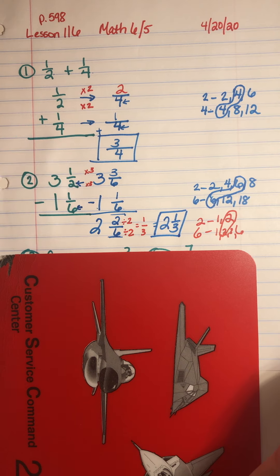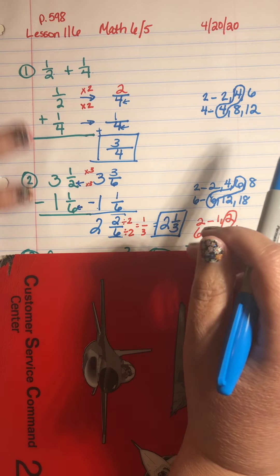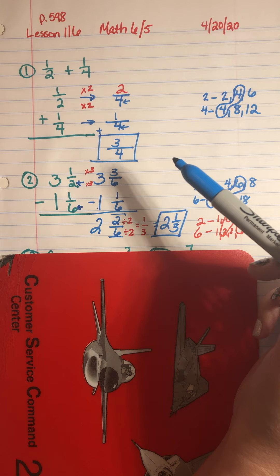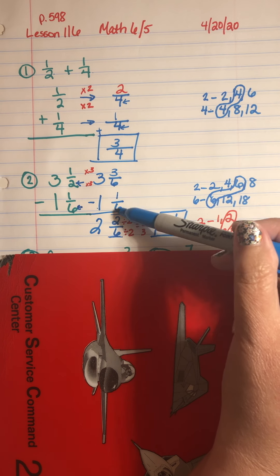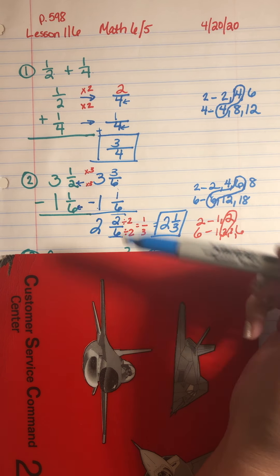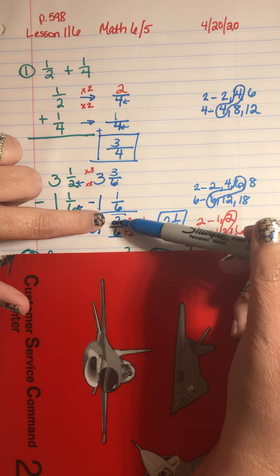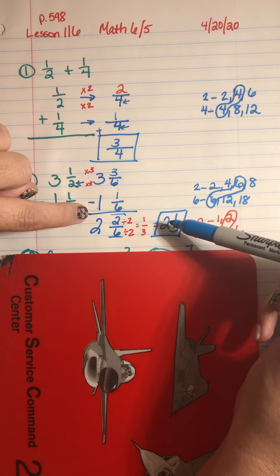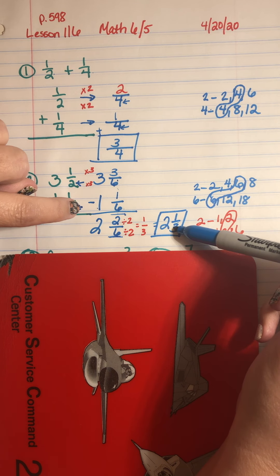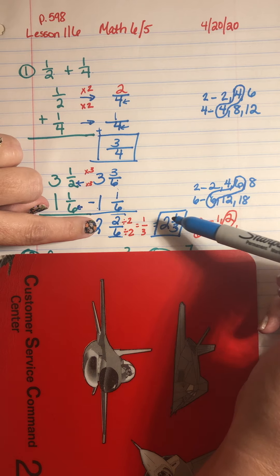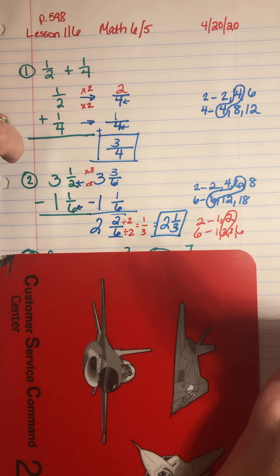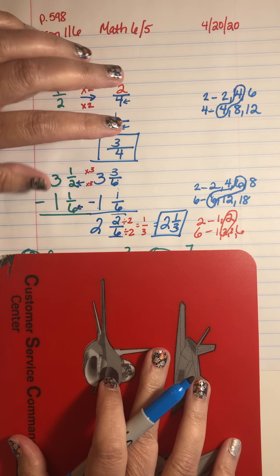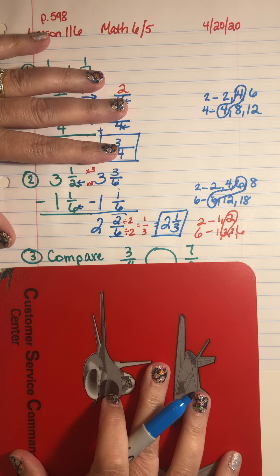So this step, we had to find the common denominator for our fraction. But then once we got our answer, we weren't done yet — we still had to reduce our answer, the fraction piece of our mixed number. So there were multiple steps to that problem.